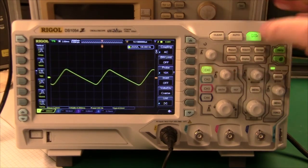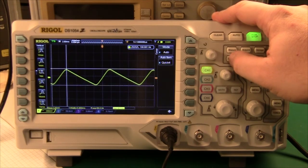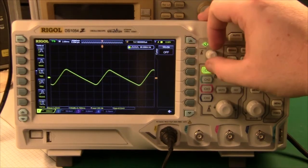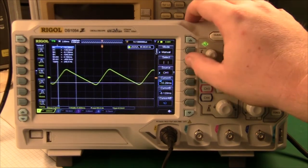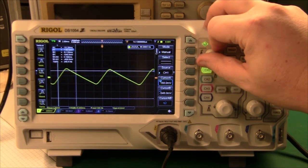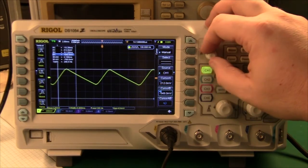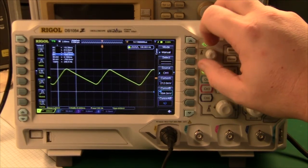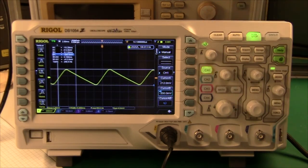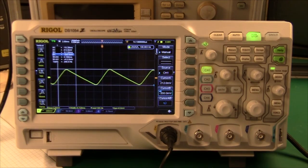Another way on a digital storage scope is to use cursors. And where do we have those? Mode here. Mode. Manual. Cursor. And then we can move them up and down. And we can put one cursor here at the top. And we can move the other cursor up.